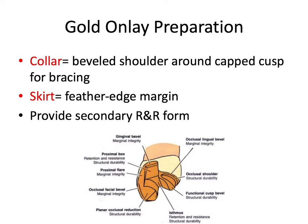Finally, the gold onlay preparation can get very complex, but the key board exam terms to know are: a collar — a beveled shoulder around a capped cusp that offers resistance form and a bracing effect; and a skirt — a less aggressive mini-preparation around a capped cusp with a feather-edge margin. Both the collar and skirt provide secondary resistance and retention form for the gold onlay preparation.